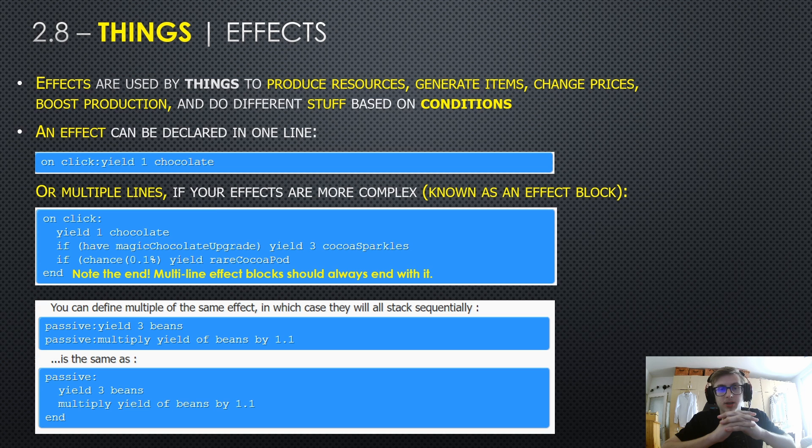An effect can be declared in one line, like we see here. For example, you can append this to a button and each time you click it, it will yield you one chocolate.